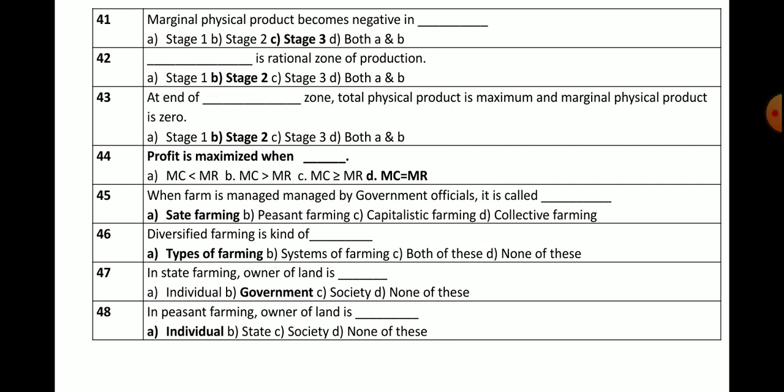Question number 41: Marginal physical product becomes negative in which stage of production function? Options are stage 1, stage 2, stage 3, or both A and B. The correct answer is stage 3 — marginal physical product becomes negative because MPP goes beyond zero.